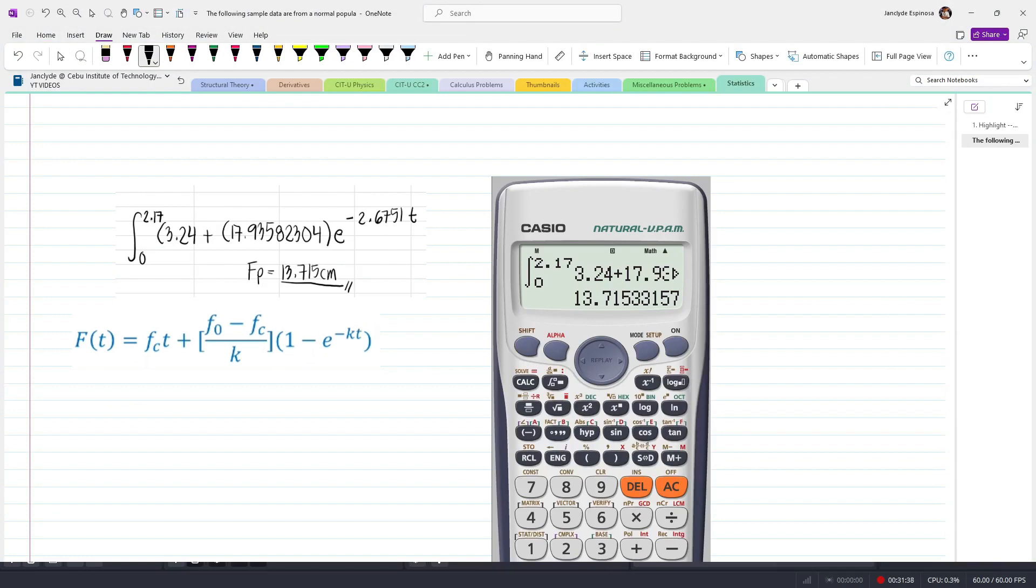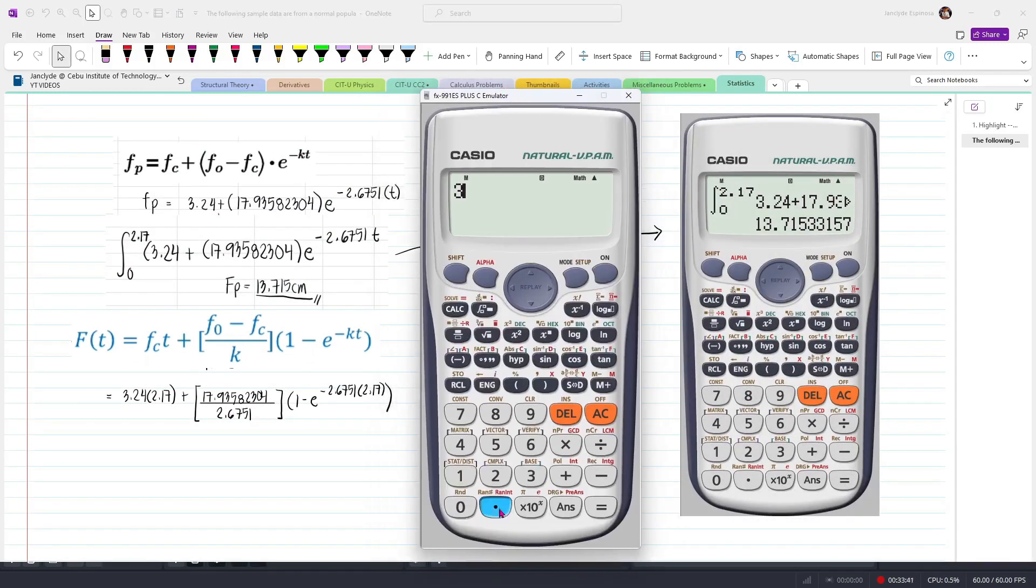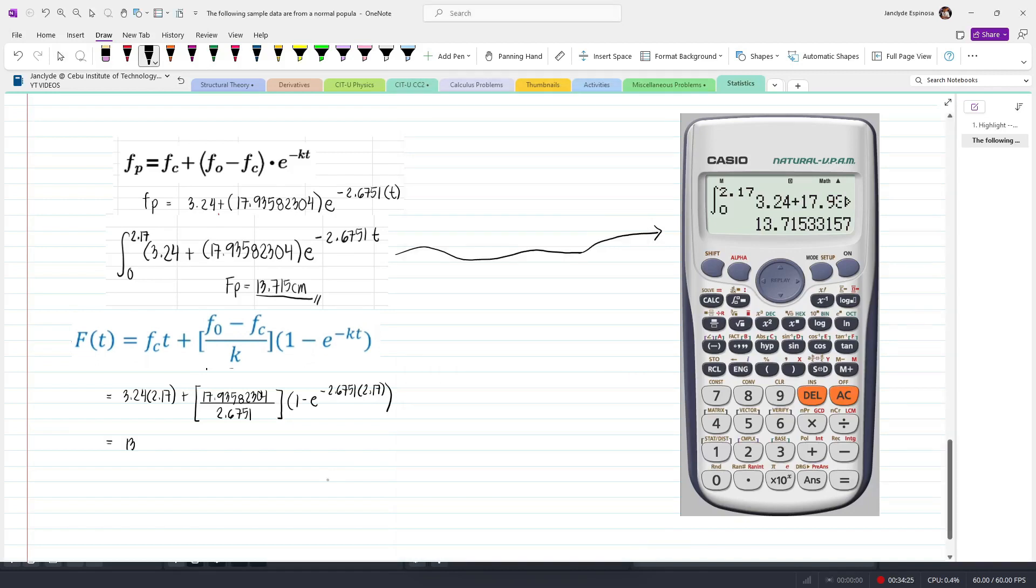Now, in order to check our answer, we actually have a derived formula for fp, which you will be able to see in hydrology books. We have fp equals fc times t plus f sub o minus fc over k multiplied by 1 minus e to the power of minus kt. Plugging in our values earlier, we will still be able to get 13.715. However, if you have a calculator that can solve definite integrals, then it's easier to just type the equation of fp.